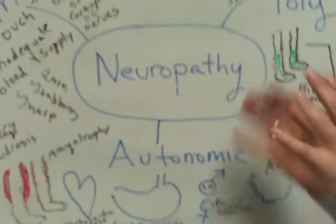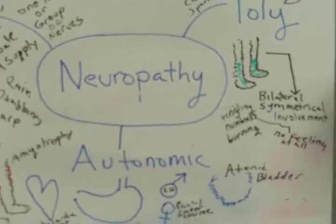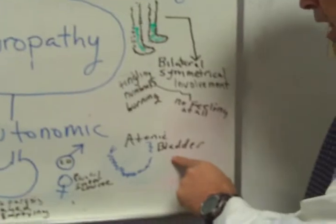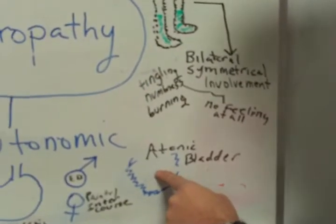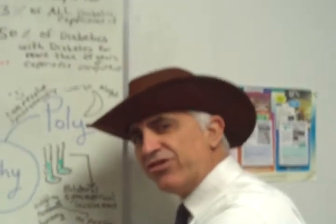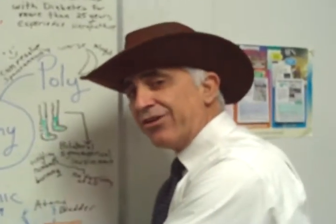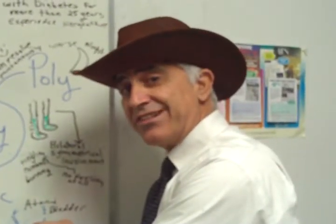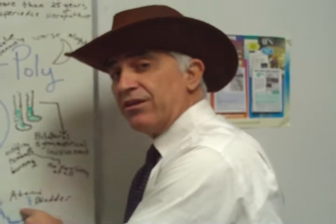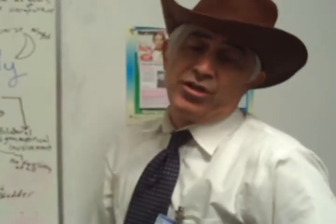If we have autonomic neuropathy, let's look at some of the areas affected. First, the atonic bladder — basically, you may have urinary retention. Urine stays in your bladder that you don't want staying there. So it affects the urinary system with urinary retention in the bladder.